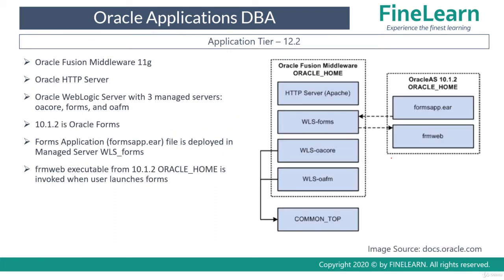Now let us see how the application tier in release 12.2 actually works. The application tier release 12.2 is based on Fusion Middleware 11g, which consists of the WebLogic Server 11g — version 10.3.6.